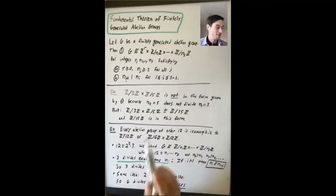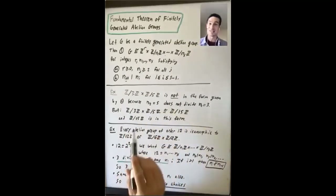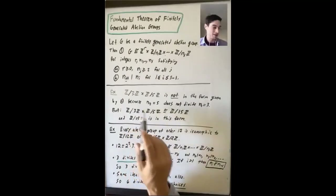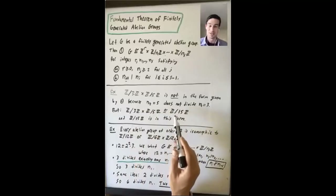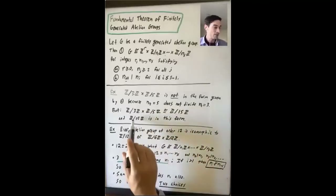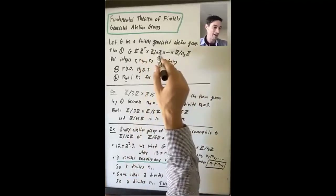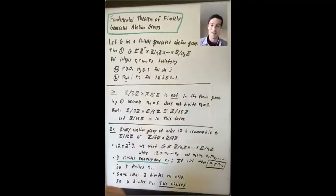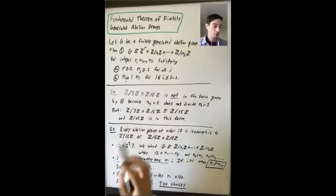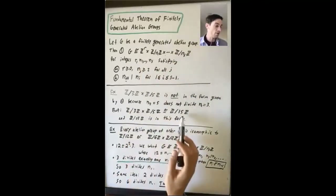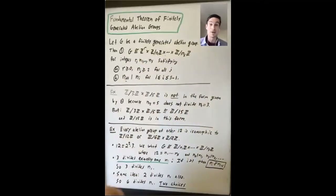Let's look at Z mod 3Z cross Z mod 5Z. This is not in the form given by the theorem — N2 is 5, which does not divide N1, which is 3, but the theorem requires N2 divides N1. However, Z mod 3Z cross Z mod 5Z is isomorphic to Z mod 15Z. The element (1,1) has order equal to the LCM of 3 and 5, which is 15, so this group is cyclic. Z mod 15Z is in the required form with R=0, S=1, N1=15.